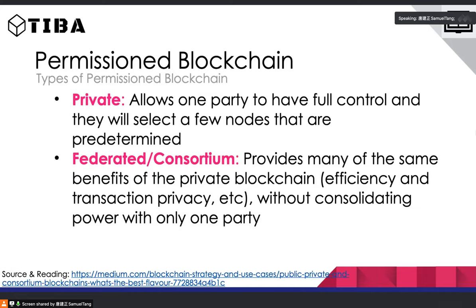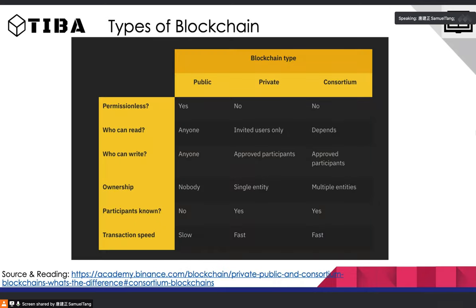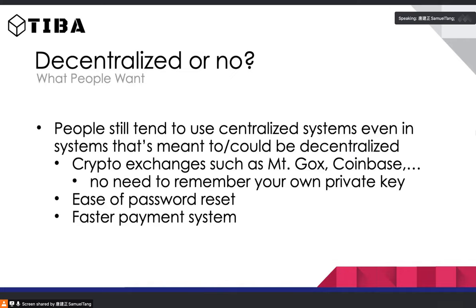The difference between private and federated — also called consortium — blockchain: private is controlled by one party. It's different from a centralized system in that it's a bit more decentralized, but quite similar. Federated is like private but instead of one party controlling everything, multiple parties negotiate and reach consensus. Looking at this graph, under the ownership row, private shows single identity and consortium shows multiple entities.